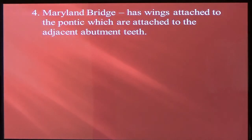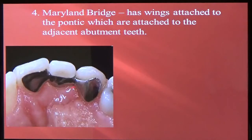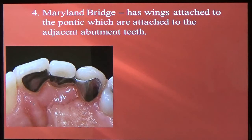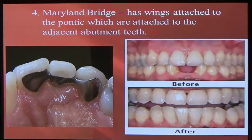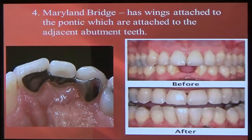A Maryland bridge is when we're missing a tooth and we don't sacrifice the adjacent teeth — we just put metal wings on the back of some teeth. Here's the missing tooth, this is the metal framework, and then you have the pontic. These are just metal wings that are bonded onto the teeth, so you don't have to cut down the teeth adjacent to the missing one. That's called the Maryland bridge. On the bottom, we're missing two teeth — the natural teeth weren't sacrificed, and you have metal wings behind these two natural teeth that are bonded on to support this Maryland bridge.